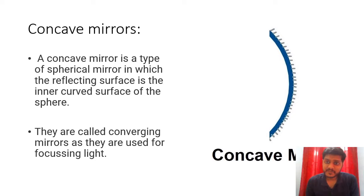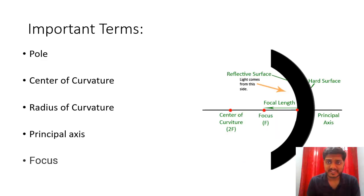Concave mirrors are a type of spherical mirror in which the reflecting surface is the inner side of that particular spherical mirror. And it is painted silvery from the outer side so that no lights can pass through it. They are also called converging mirror due to their geometrical shape.